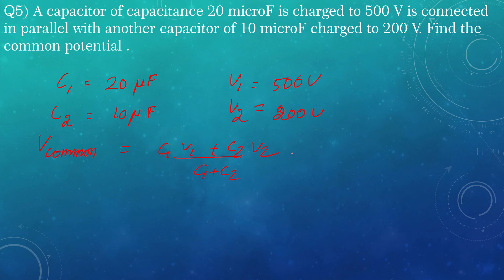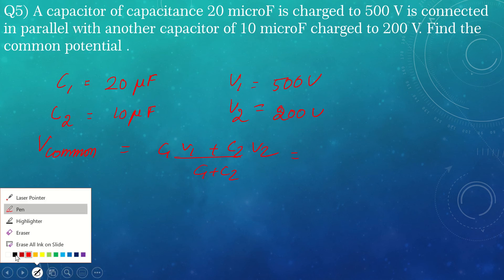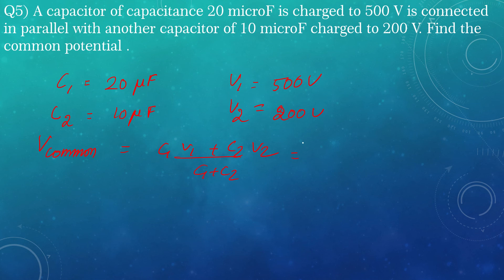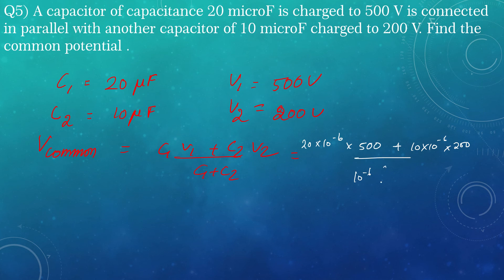Converting to farads: 20 into 10 raised to minus 6 into 500, plus 10 into 10 raised to minus 6 into 200, divided by 10 raised to minus 6 into the sum 20 plus 10, which is 30. That gives us 20.